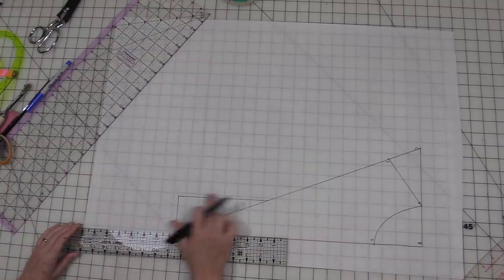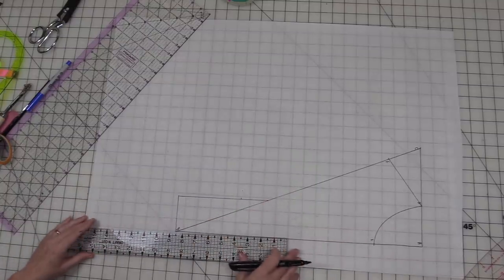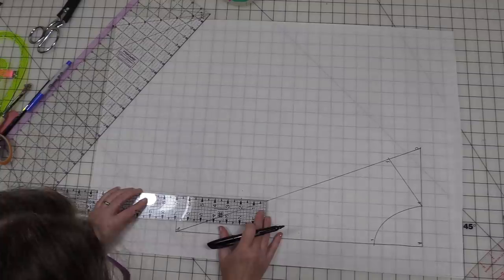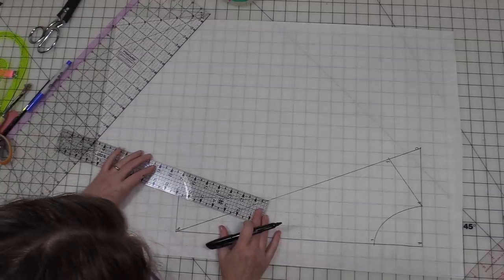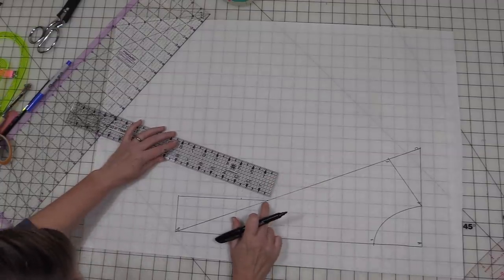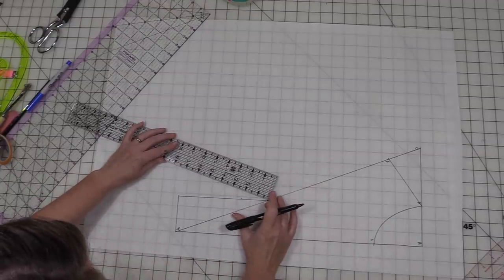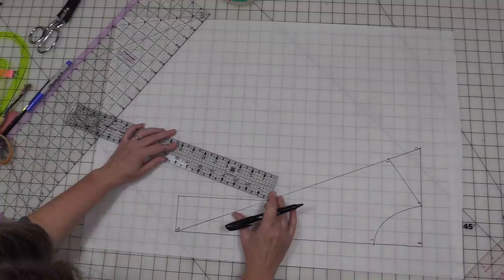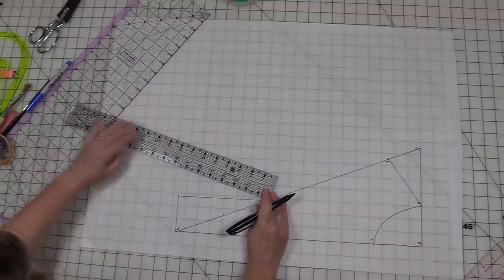I'm just going to use my easy hem gauge right there because it's exactly five eighths. What I need to do is measure my dart leg because you want your dart legs to be the same length. It is right at seven inches. So I'm going to come over from this line. I want to intersect that one and come out seven inches.